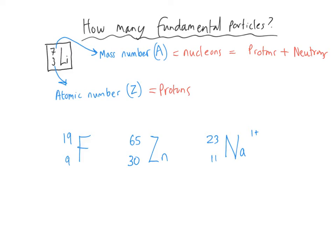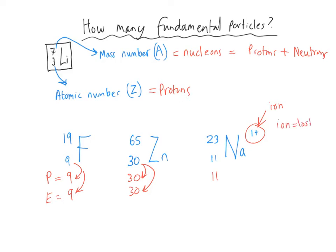Looking at fluorine, it has nine protons. For atoms, the number of protons and electrons is the same, so fluorine also has nine electrons. Zinc has 30 protons and 30 electrons. For sodium with a 1+ charge, that tells us it is an ion that has lost one electron — so it has 11 protons but only 10 electrons.